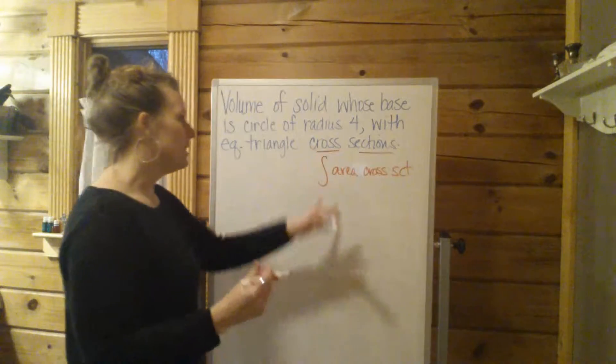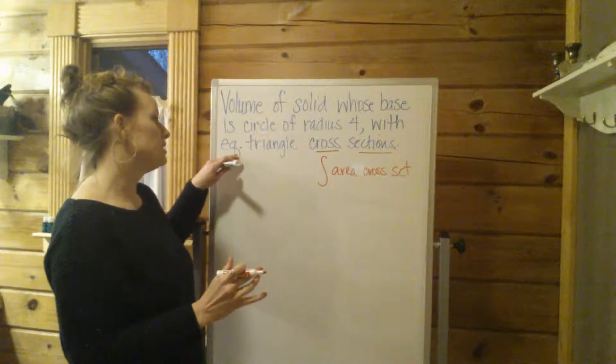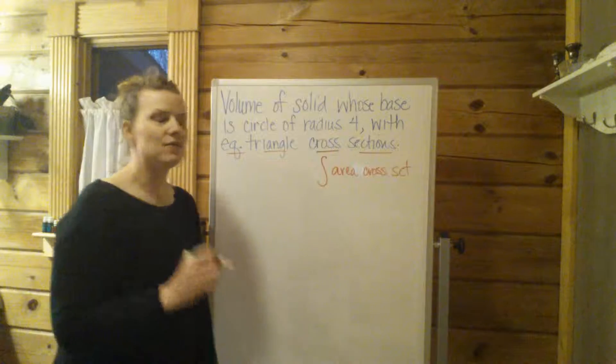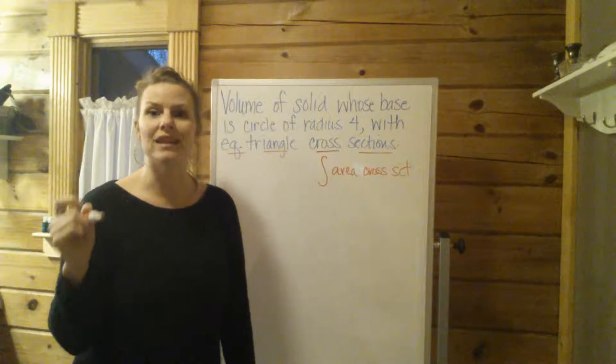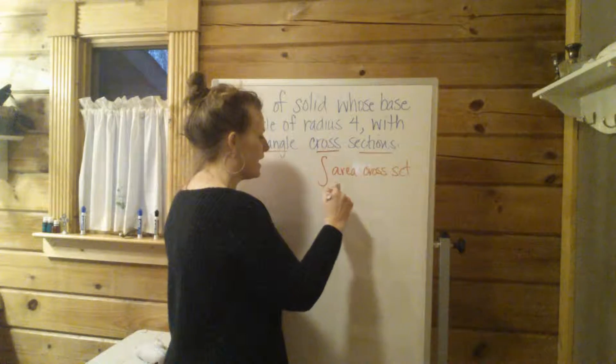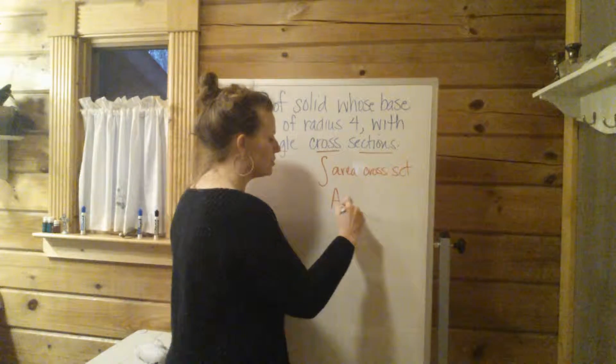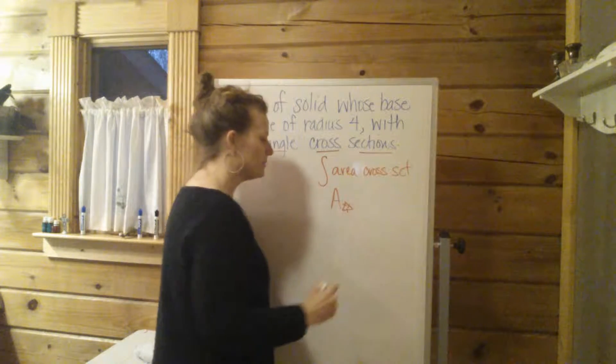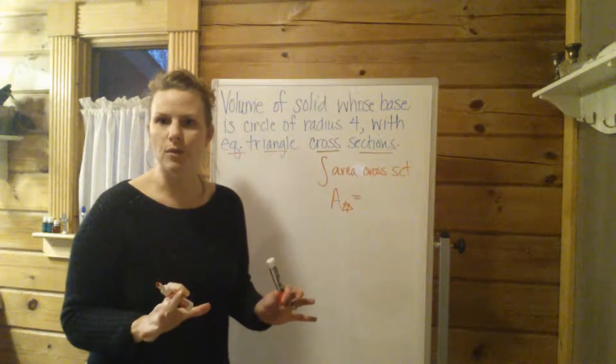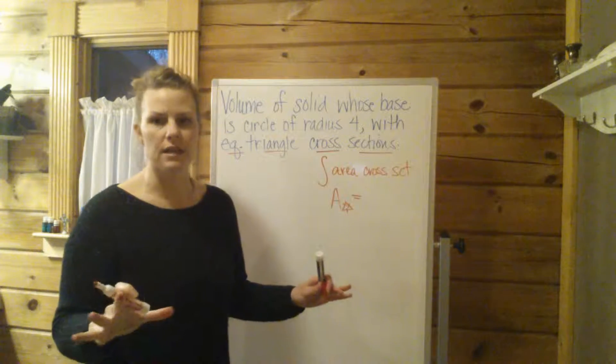Now in this particular problem they want your cross sections to be equilateral triangles. So you have to go back and remember how to find the area of an equilateral triangle. So let me write that out. I'm going to draw it like this. That's my little equilateral triangle symbol. Now look this up. If you need to look up this formula that's okay.